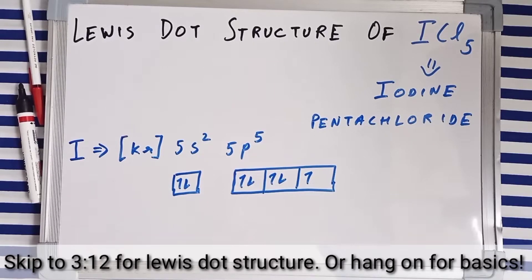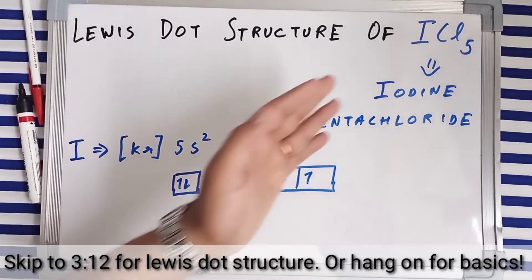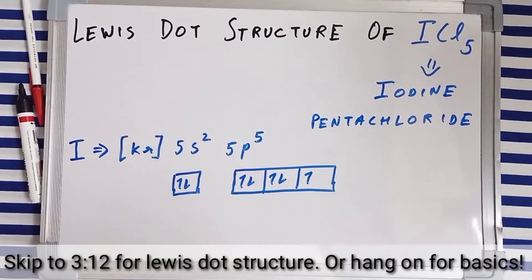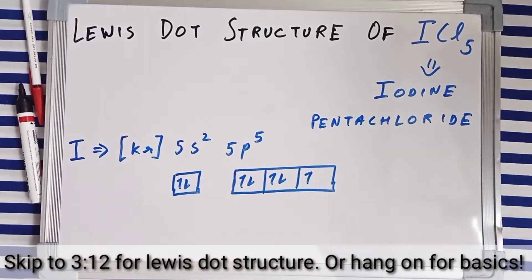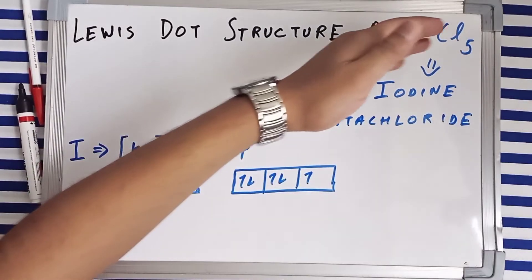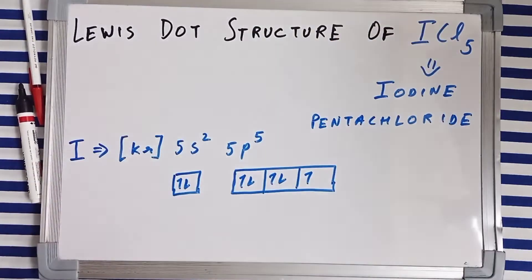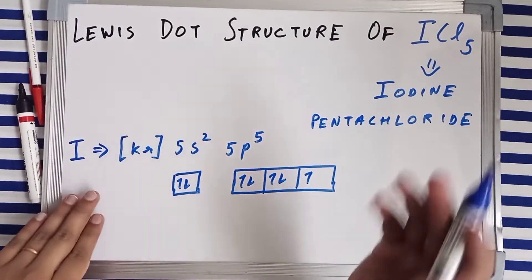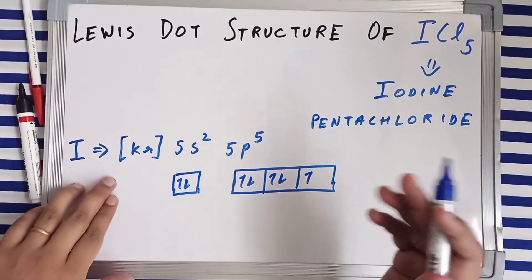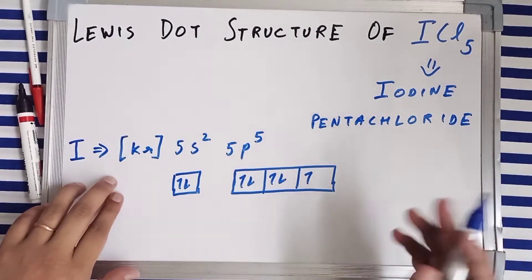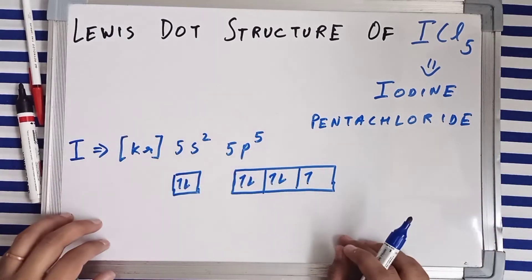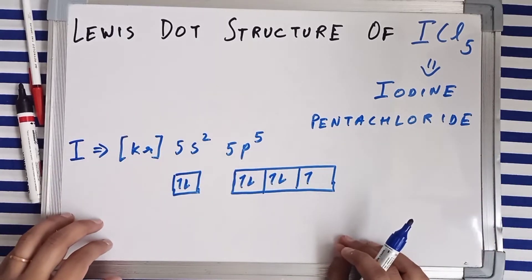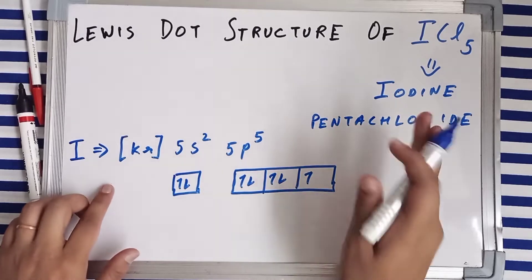To draw the Lewis dot structure of ICl₅, we need to find out the valence electrons of the different atoms present in ICl₅, which are iodine and chlorine. To find the valence electrons, we are going to discuss the electronic configurations of the different atoms.